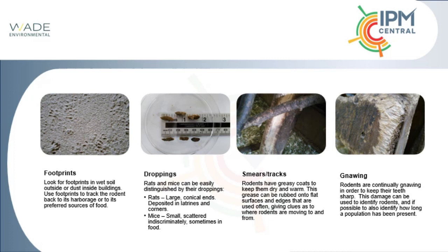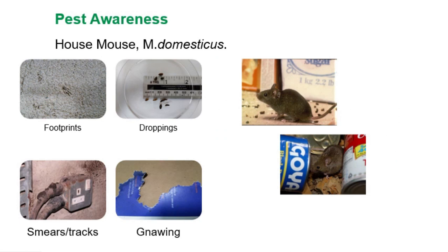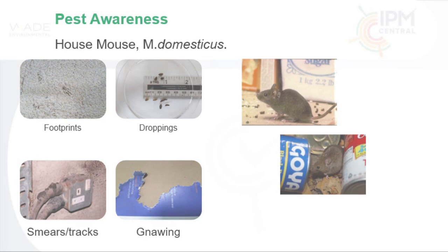Looking for signs of rats, you'll be looking for footprints in softer surfaces or dust. Pest management is all about knowing the feces of these animals — rat droppings are relatively large, about a centimetre, tapered at one end and blunt at the other, like little torpedoes. Everywhere rodents go they leave greasy smears along from their coats — as they run alongside objects they'll create a greasy smear and a track mark.